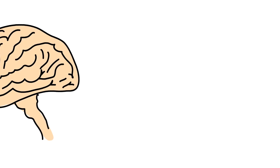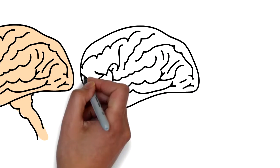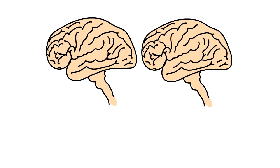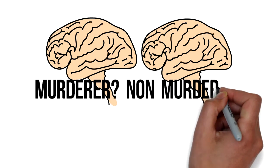The aim of Raine's study was to find out if there is a difference in the structure of brain activity between people who have committed murder and those who have not.